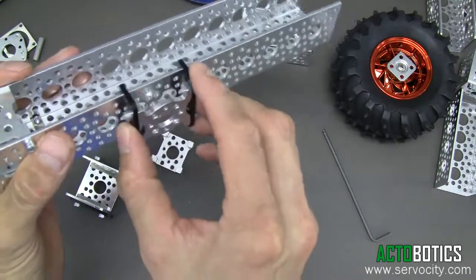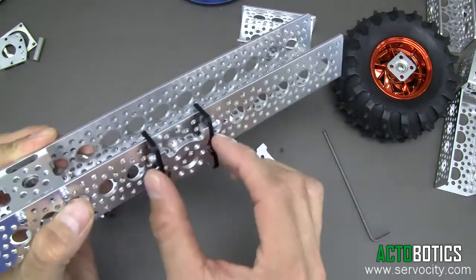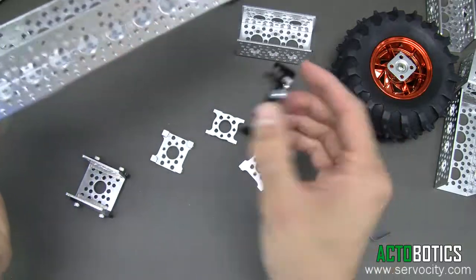They can go on either side of the channel, any length. They work really well on long pieces of channel if you're building a camera slider or something like that.